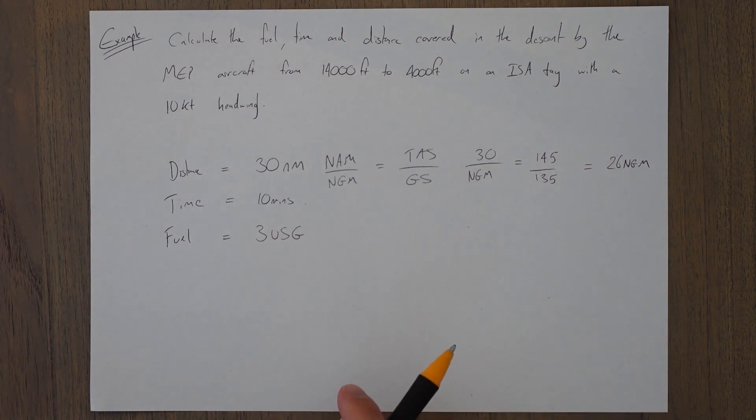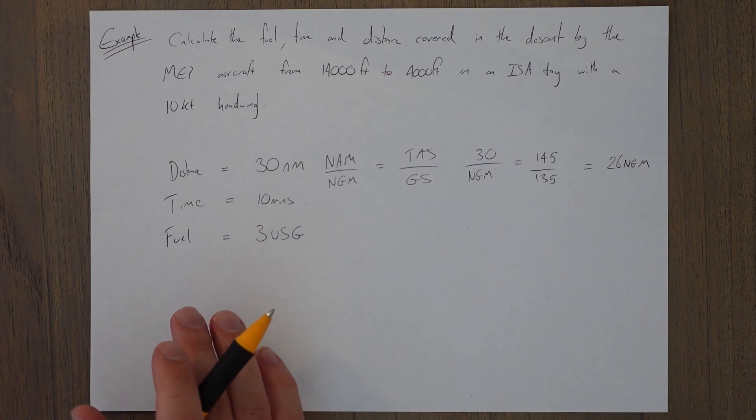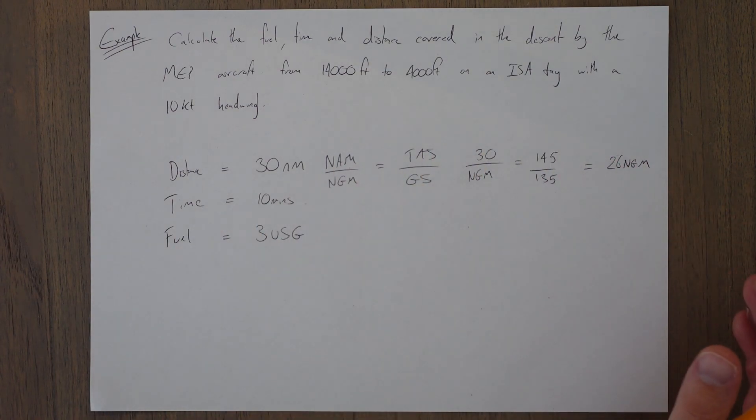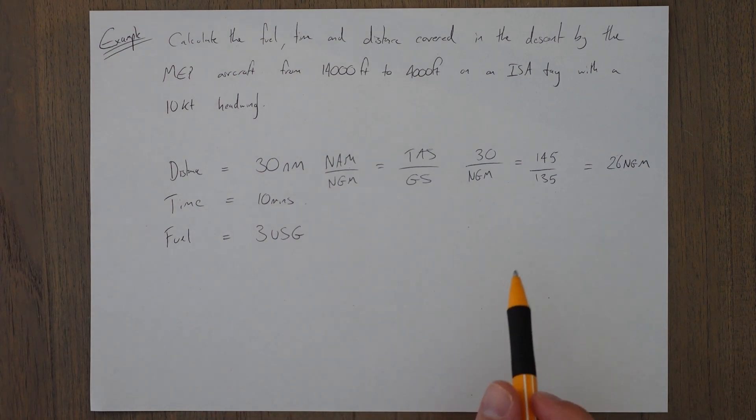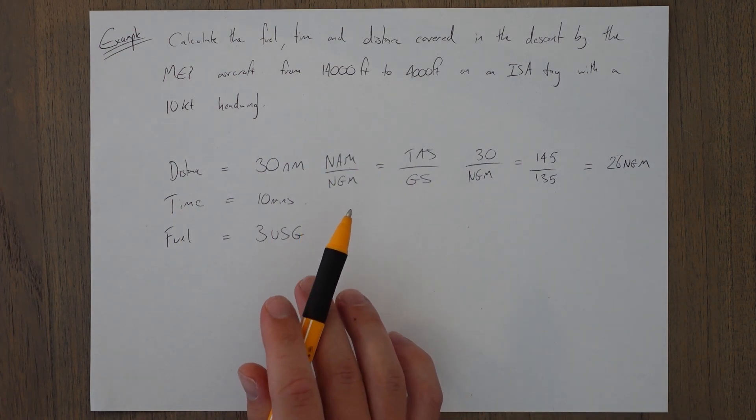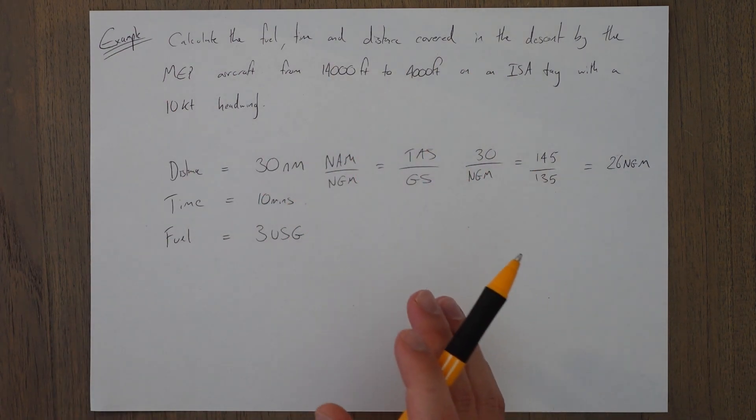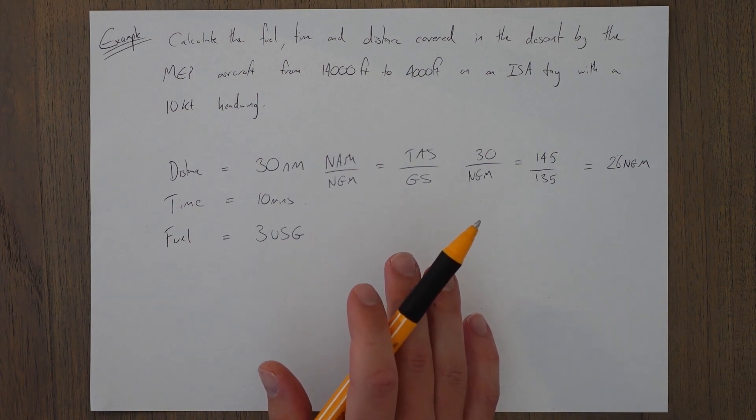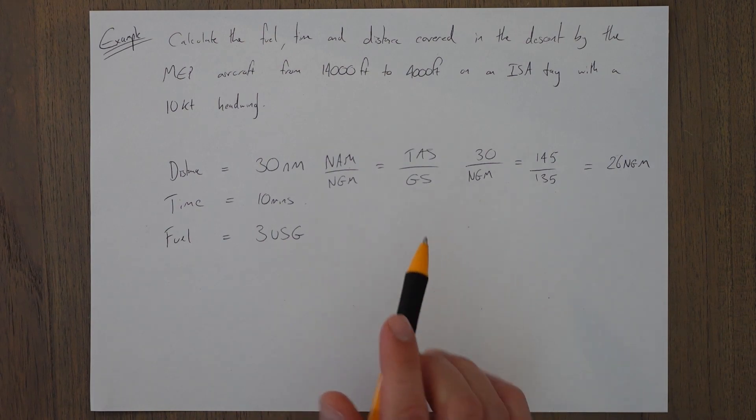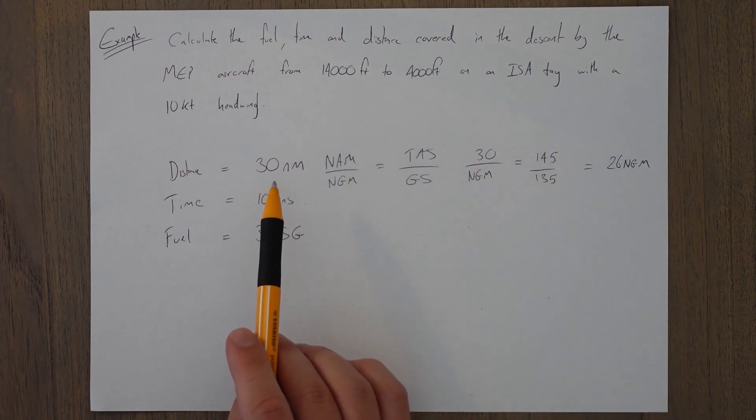So in the descent we go 26 nautical miles over the ground, it takes us 10 minutes, and we burn through 3 US gallons of fuel. Again, use that information in our journey log. We track it; we know how much fuel we need for that certain portion of the flight. That's it for the SEP and MEP graphs. They are fairly straightforward. You just need to pick out the information that's relevant, look out for any adjustments such as those notes, and remember the trick of adding in the wind for the climb and descent graphs.